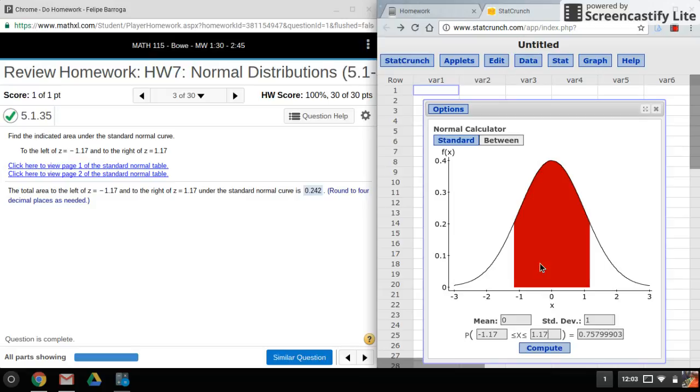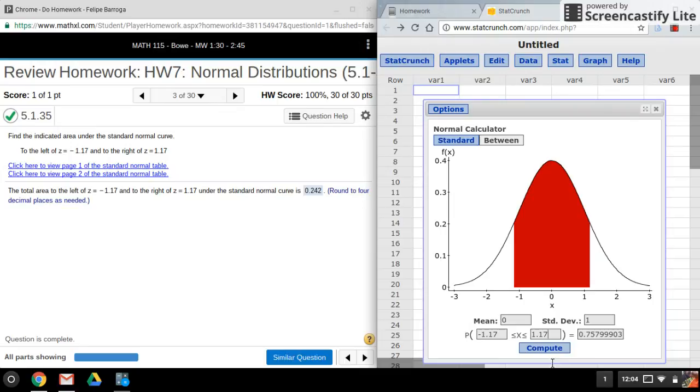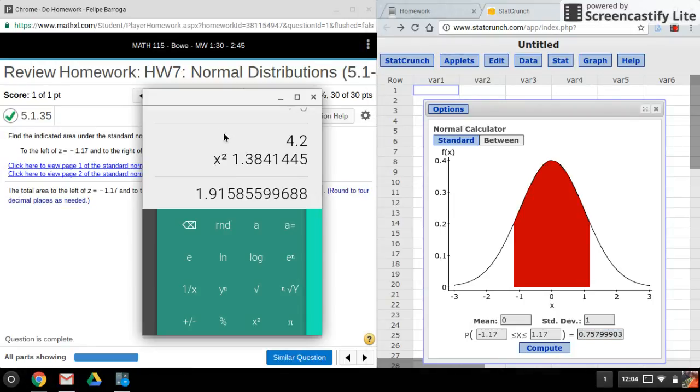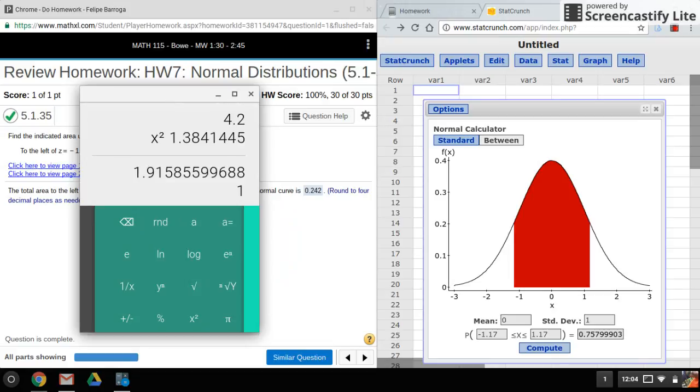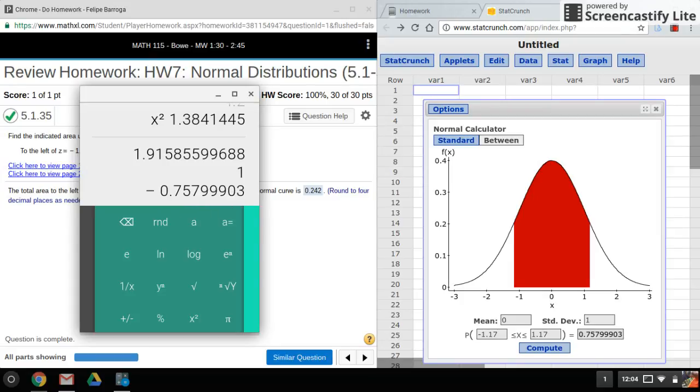Now we want the area in the unshaded parts. If you remember that the total area under the curve is equal to one, we can subtract this area from one. So if I do that and just put the whole thing in just to be safe, that is the area to the left of our negative value and to the right of the positive value.